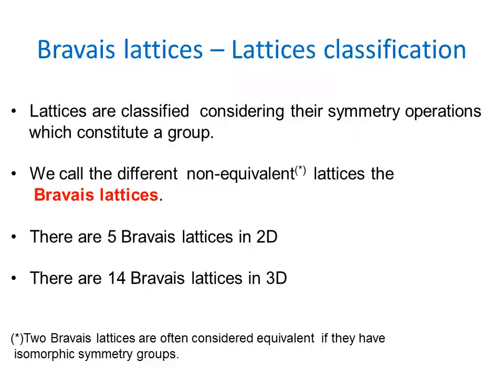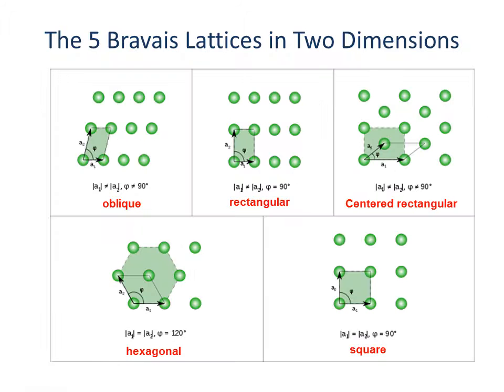Lattices are classified by considering the symmetry operations that form a group needed to describe the crystal. This leads to the Bravais lattices — there are 14 Bravais lattices in 3D and 5 in 2D. The five two-dimensional Bravais lattices are: oblique, rectangular, centered rectangular, hexagonal, and square. The centered rectangular lattice can be described by either a primitive unit cell or a centered rectangular cell.